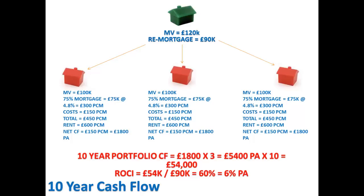If we take the £5,400 per annum and multiply that by 10 years of rental income, that's £54,000 net income over 10 years — money you are going to earn from just renting these three properties over 10 years. So what does that mean in terms of the ROCI? ROCI stands for return on cash invested — the return on the money that you've put in.